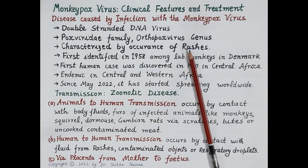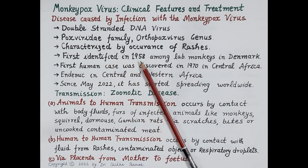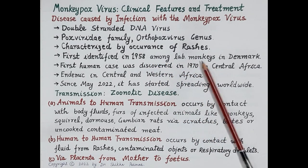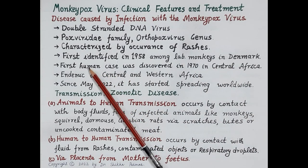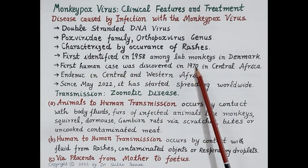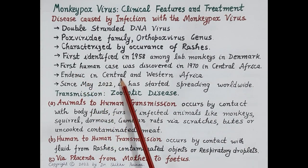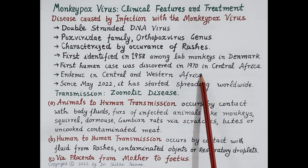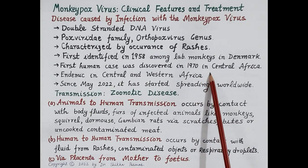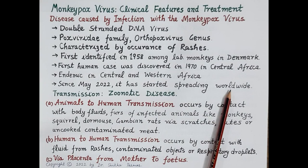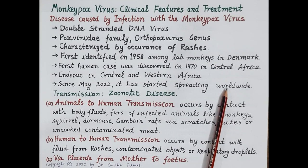Monkeypox is characterized by the occurrence of rashes on the body. Monkeypox virus was first identified in 1958 among laboratory monkeys used for research in Denmark. The first human infected case of monkeypox virus was discovered in 1970 in central Africa. The infection is endemic in central and western Africa and rarely spreads outside these areas. Since May 2022, monkeypox has started spreading worldwide and the WHO has declared this disease as a global health emergency.